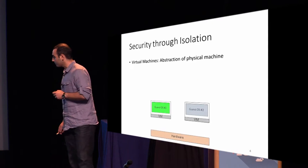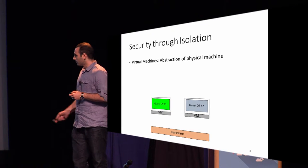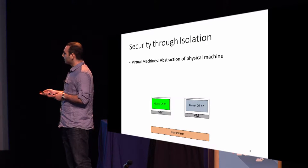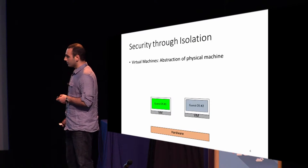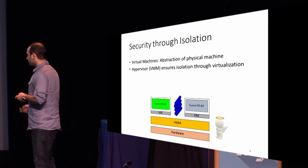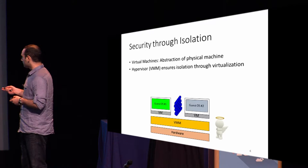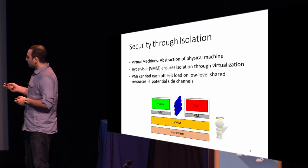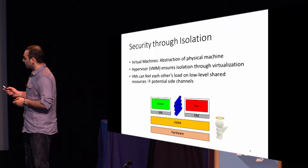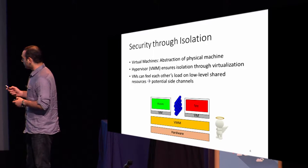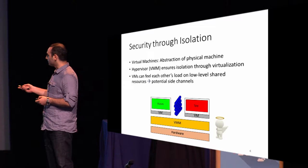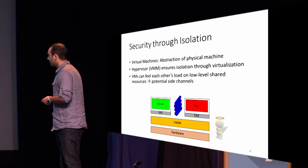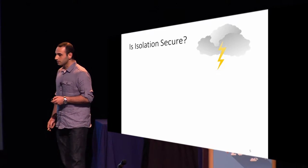Isolation. In the cloud, different operating systems — named here as guest OSes — run in a sandbox environment inside a VM. The isolation between these VMs is maintained by the virtual machine manager, also called the hypervisor. However, since low-level resources are shared between these VMs, this can turn the scenario into a victim-and-spy situation where one VM can spy on the other. So is this isolation secure?